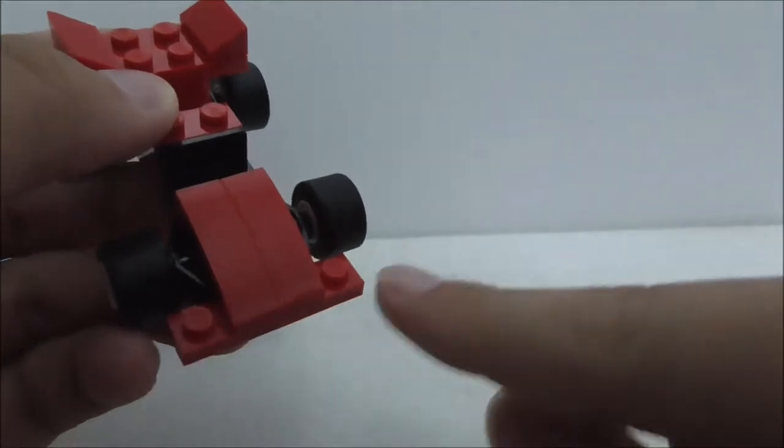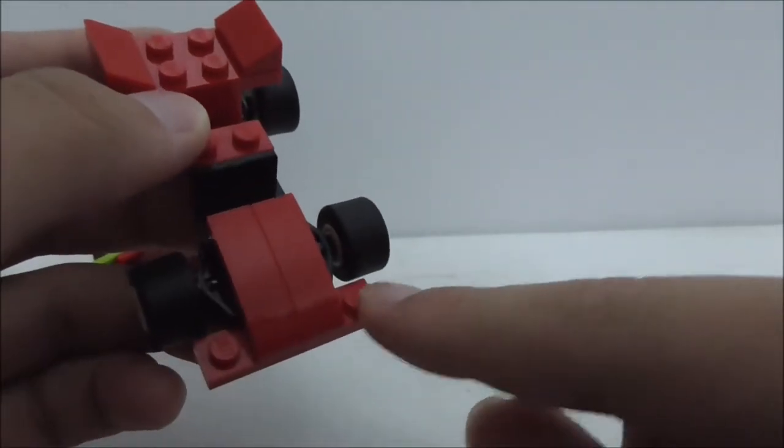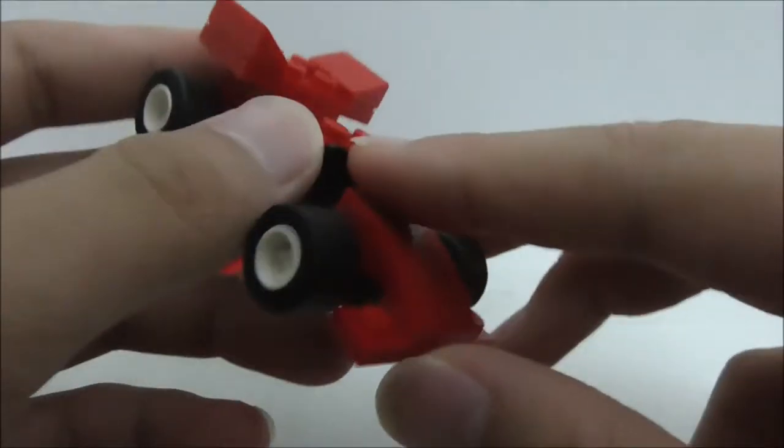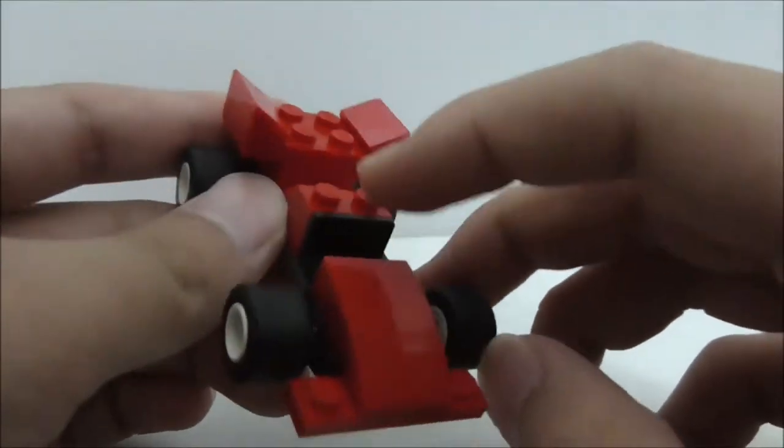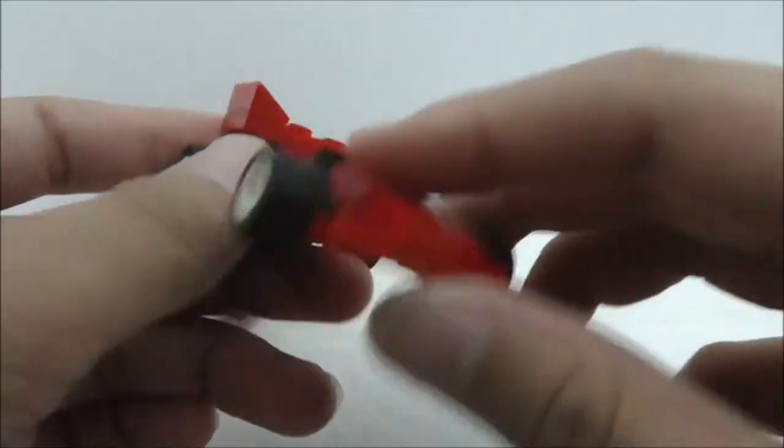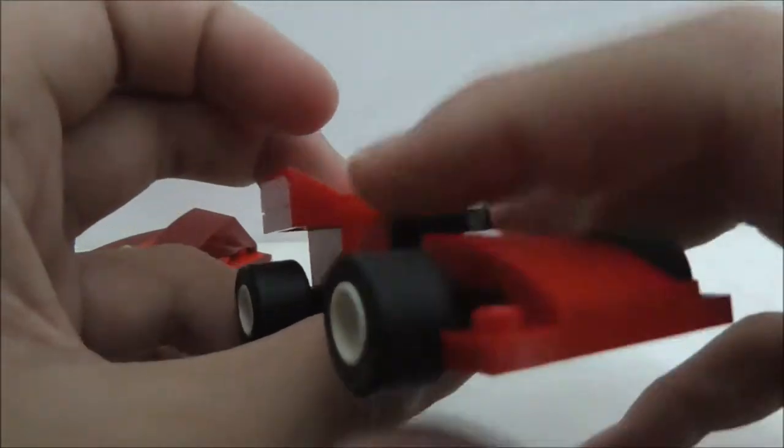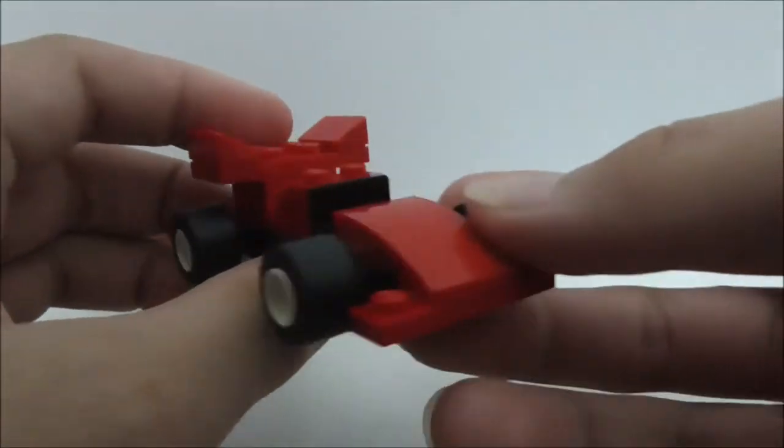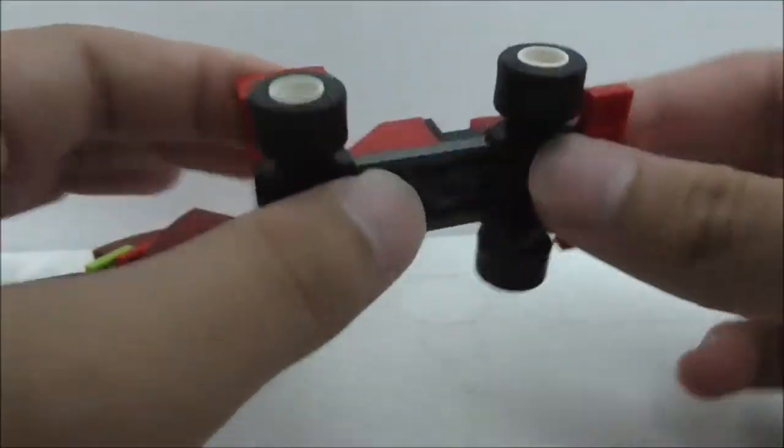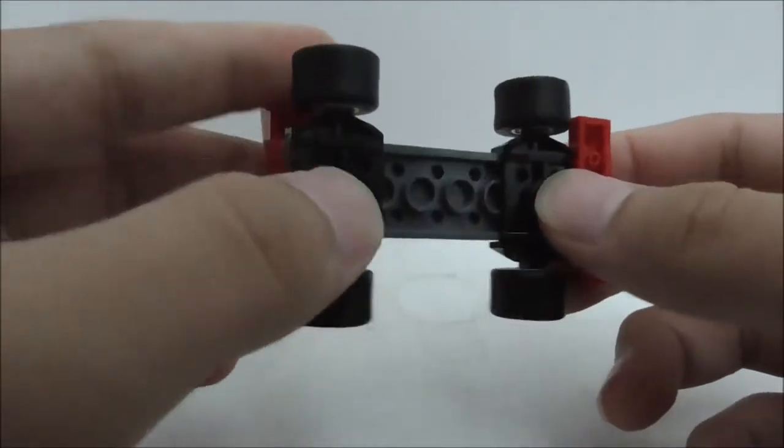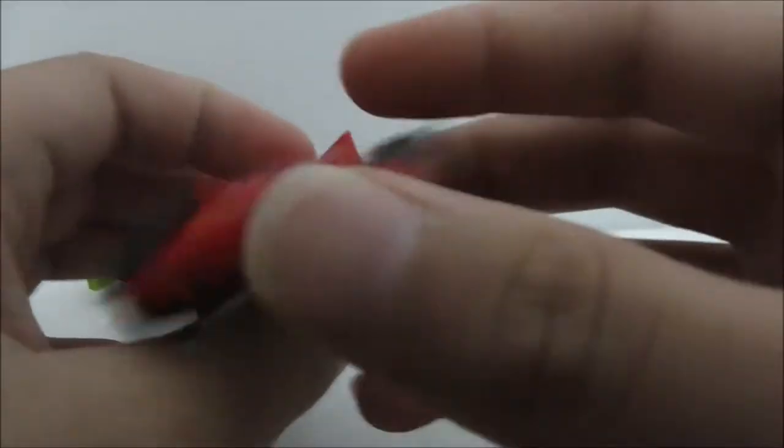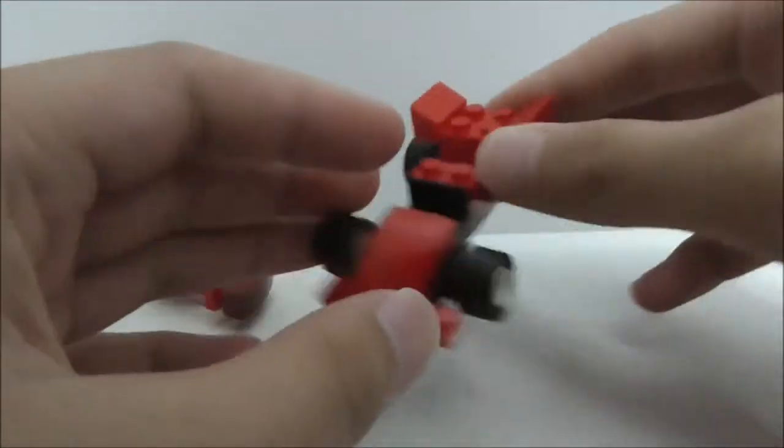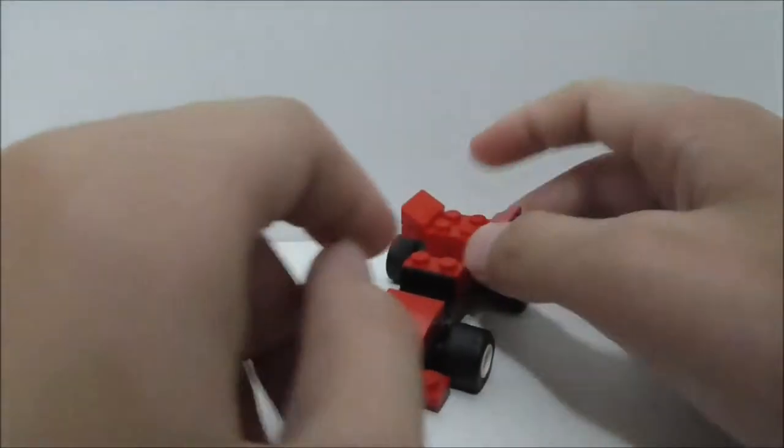You got this seat right here with a back headrest and you got this huge wing at the back. I really like the red color scheme on this kind of Formula One car. That's pretty much it for all of the builds in the set.